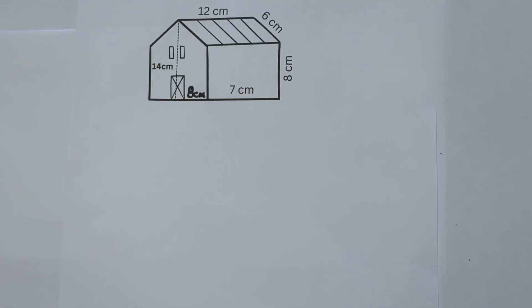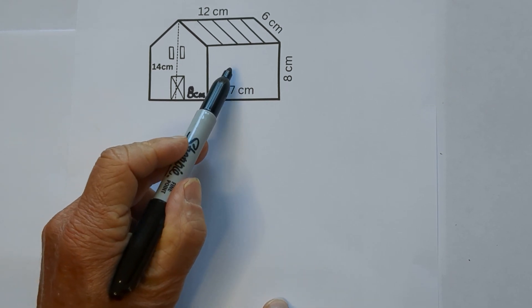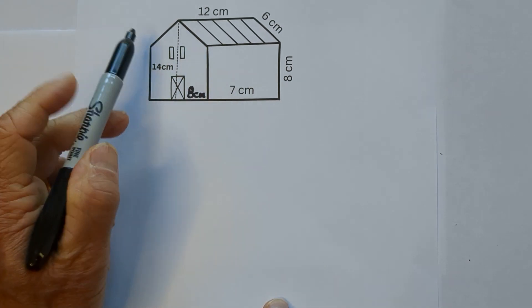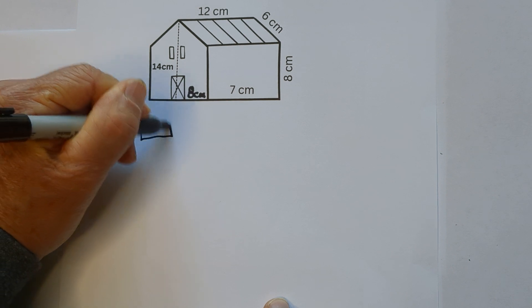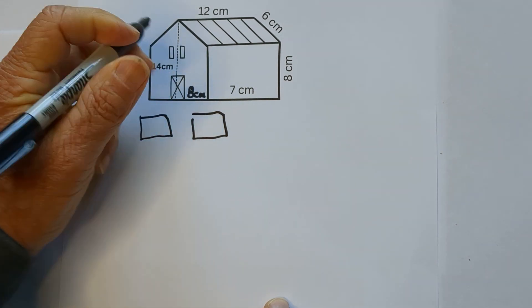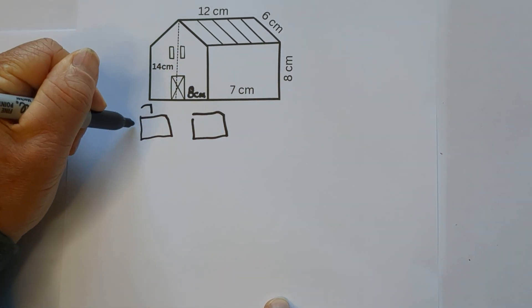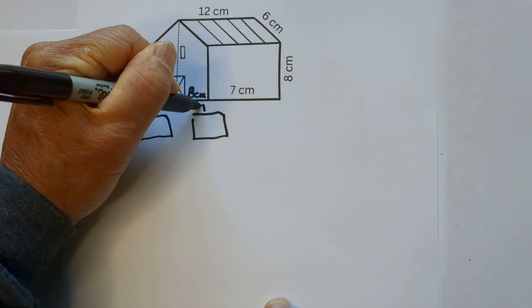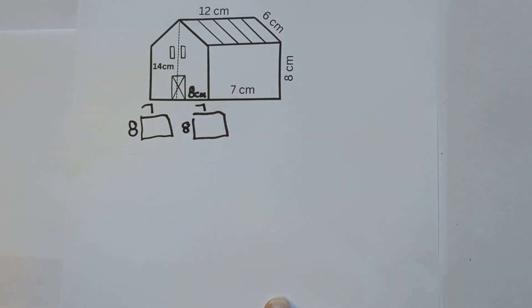Okay, so first we have this rectangle and we have one on this side and the other, so I'm gonna draw two rectangles. It's going to be 7 by 8 and both of these are 7 by 8. So we have this side now.